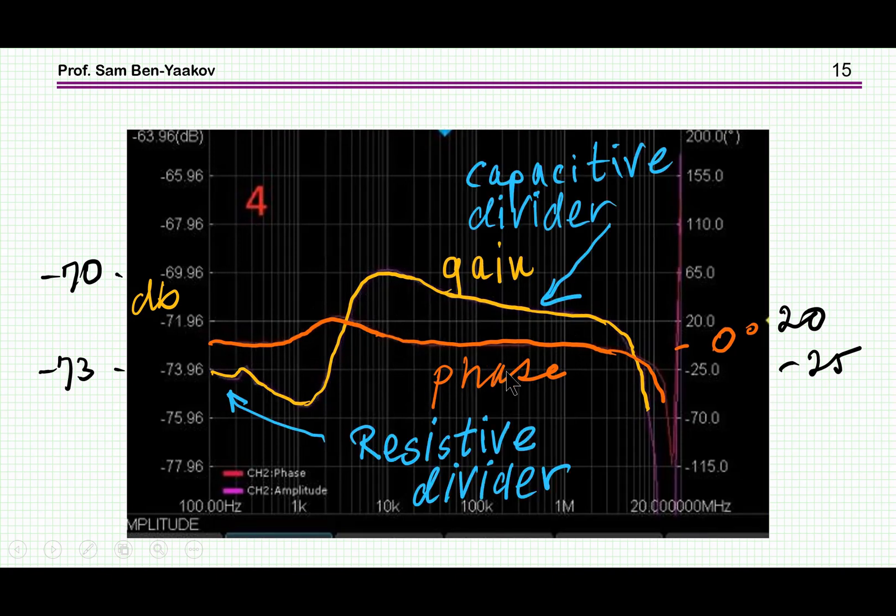It is interesting that the phase starts with zero, which we would expect because this is a resistive divider. But then it goes back to zero after a small hump here. This would suggest that in this configuration now, we have two regions. One is a resistive divider. Here it is. So we have zero phase shift because it's resistive. And then apparently here we have a capacitive divider, which again will not have a phase shift or should not have any phase shift. So this could explain the situation.